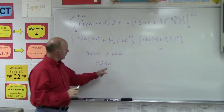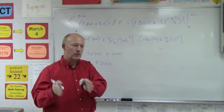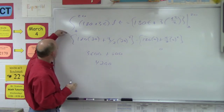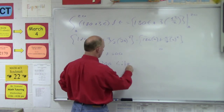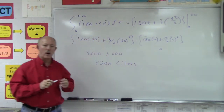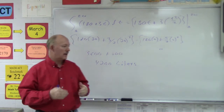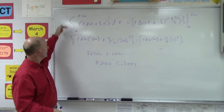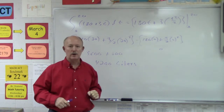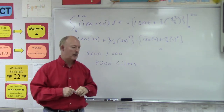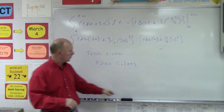The net change — the amount of water that has flowed into the tank over the first 20 minutes — is 4,200 liters. From t equals 0 to t equals 20, that's the amount of water flowing into the tank. A simple net change problem. You just have to make sure you know how to evaluate the definite integral correctly.